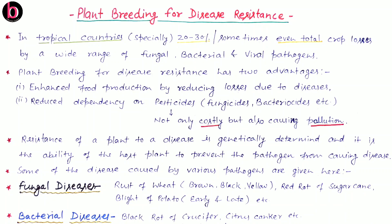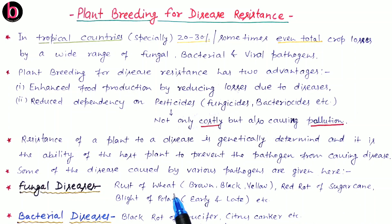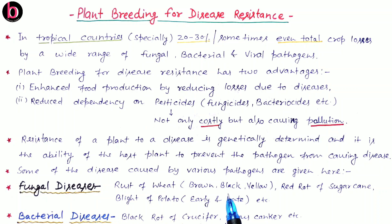We have to find out the particular gene responsible for protection against a particular pathogen and introduce it into more productive varieties for improvement. Some diseases caused by various pathogens include fungal diseases: rust of wheat, which has three kinds — brown rust, black rust, and yellow rust — affecting stem as well as leaf. Black rust is very important and is caused by the fungus Puccinia graminis tritici. All kinds of rust are caused by fungus, except red rust of tea, which is caused by an algae.